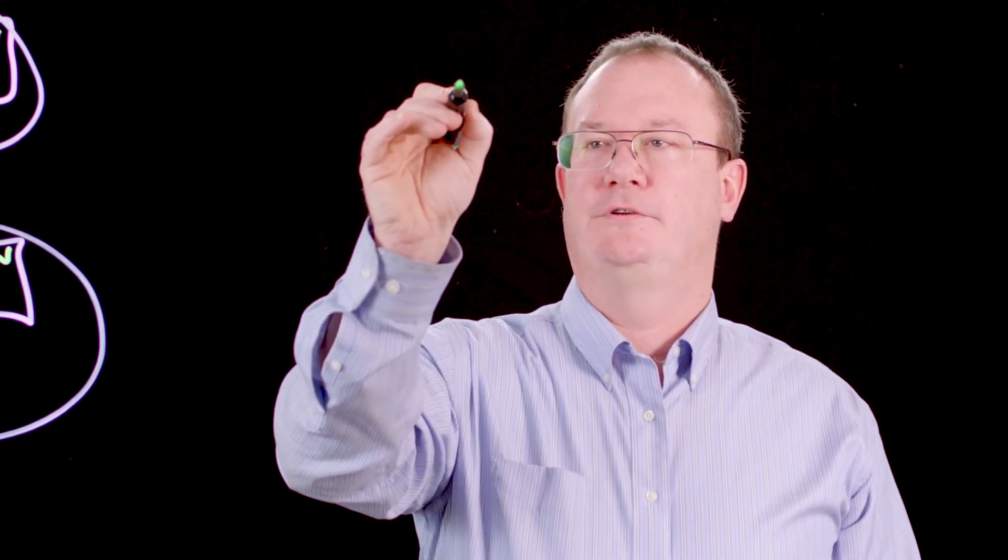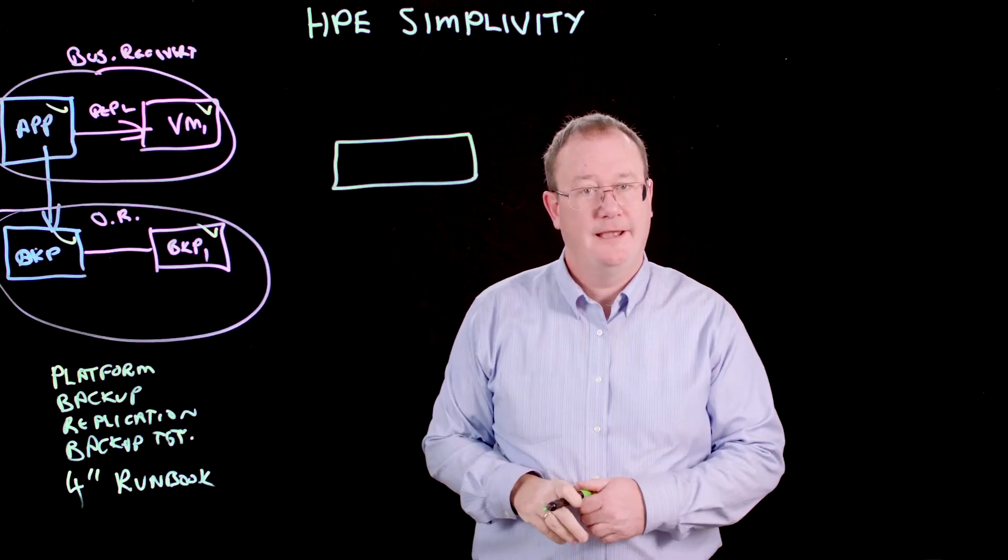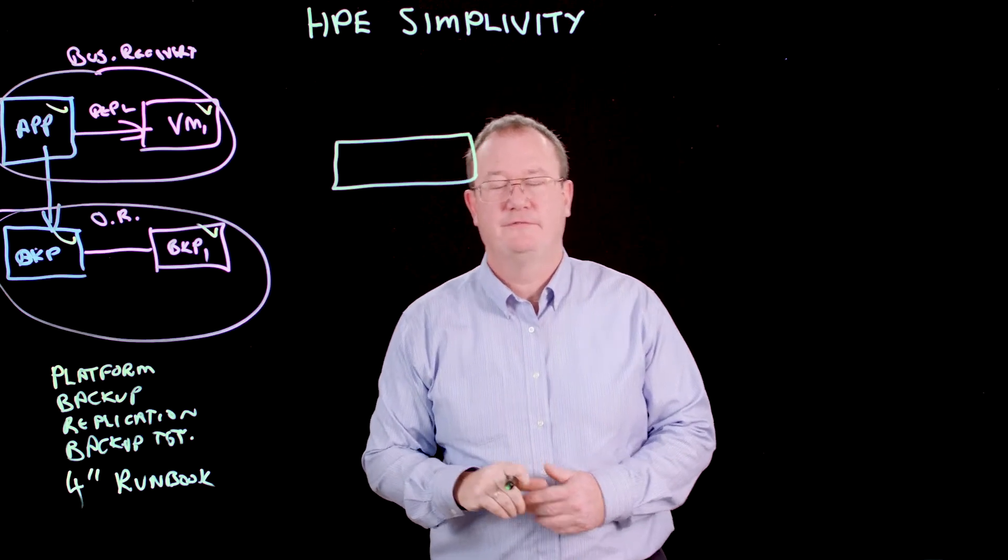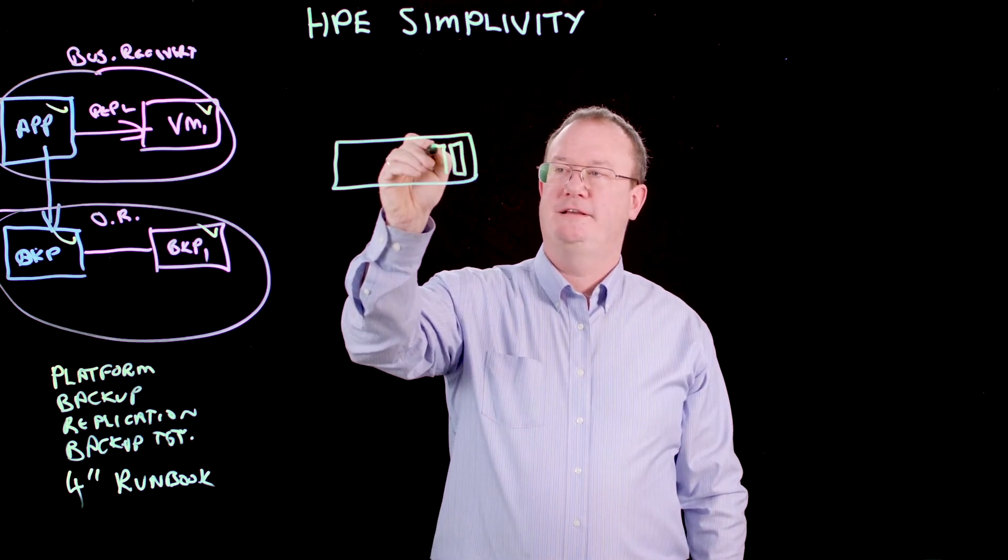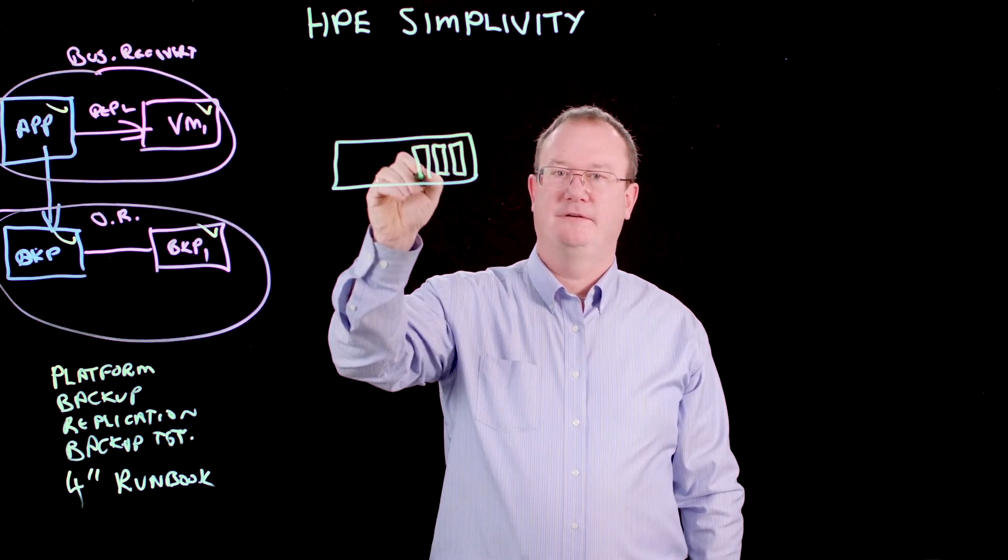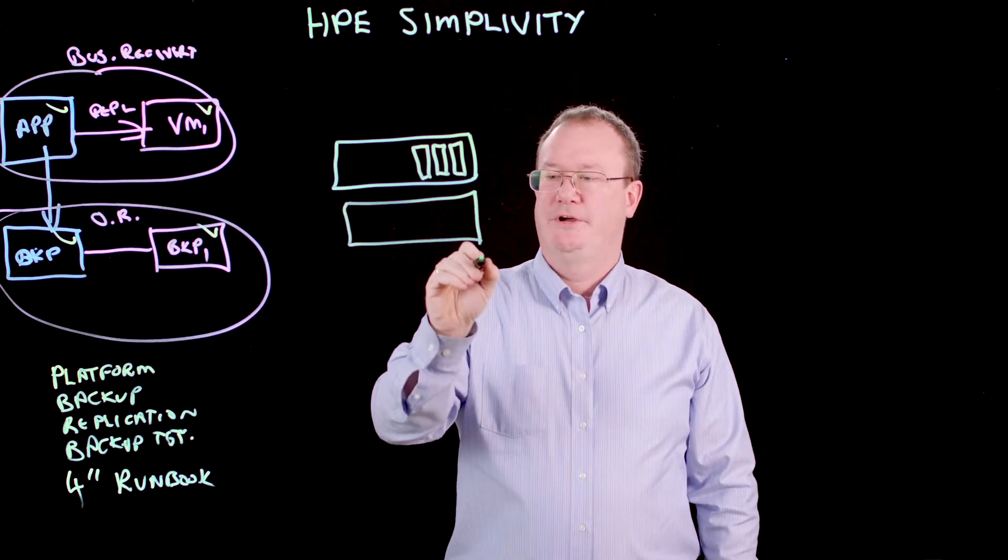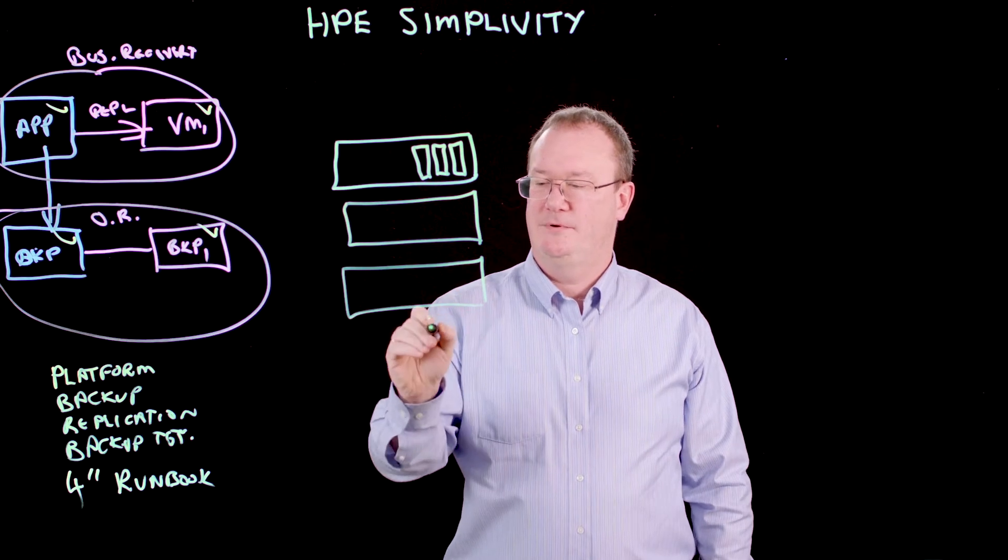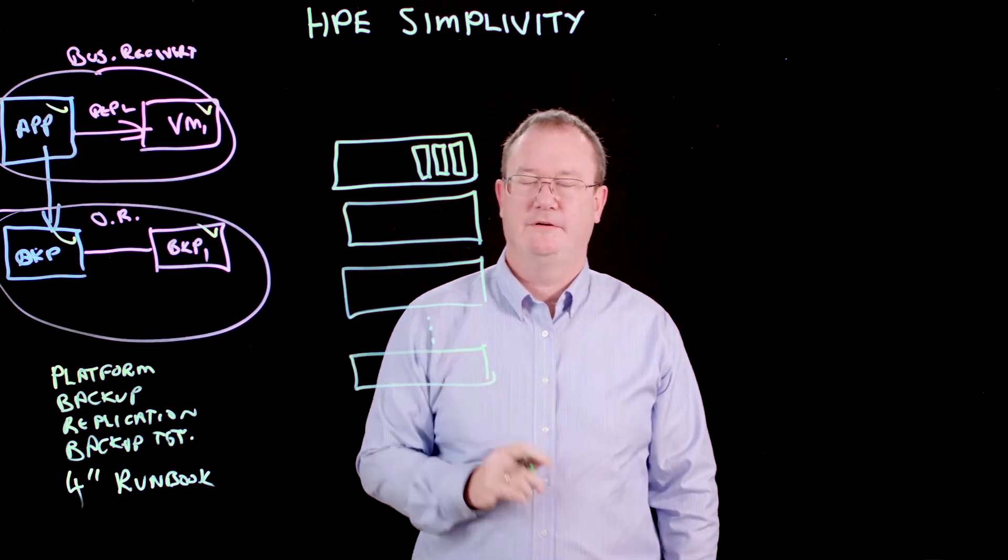As I mentioned, HPE SimpliVity is a hyperconverged appliance. So like any hyperconverged solution, it's deployed on a server, in this case HP's DL380, the best-selling server in the world. Now storage for our hyperconverged solution is on disks that sit in these servers that are in this cluster. We deploy the cluster in multiple nodes. So let's take this example, we might have maybe five or six nodes.